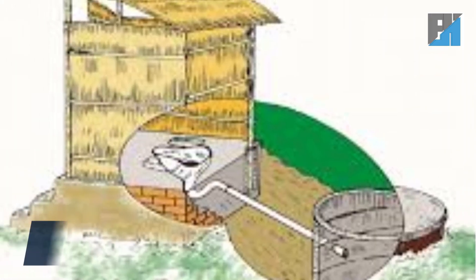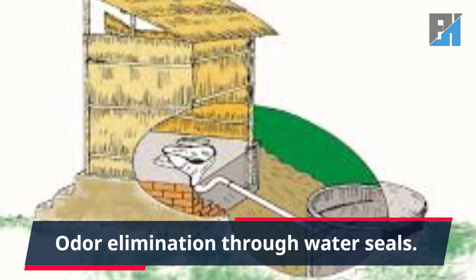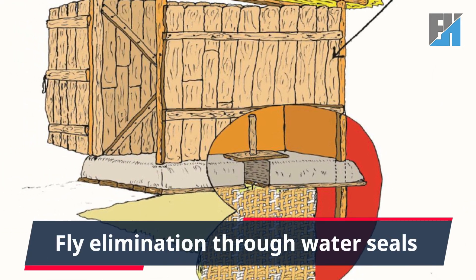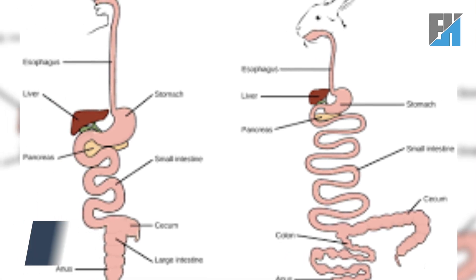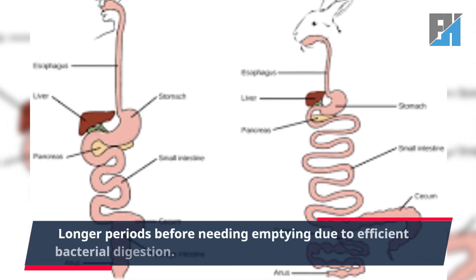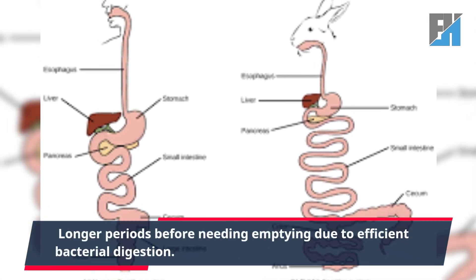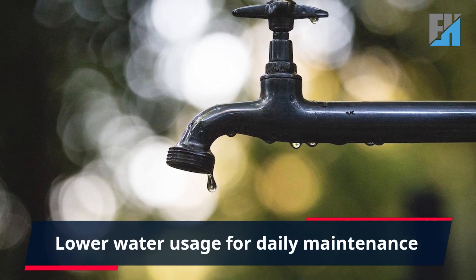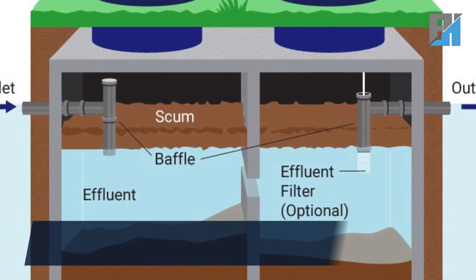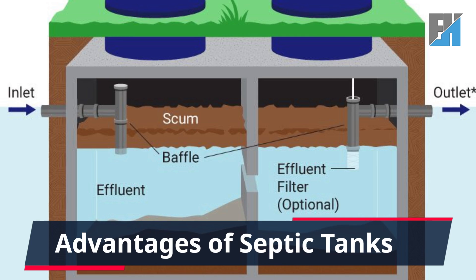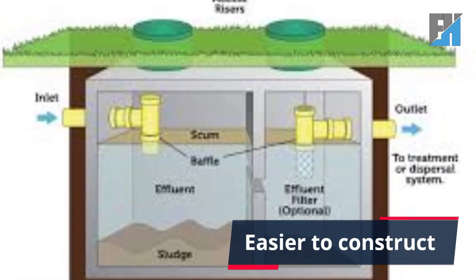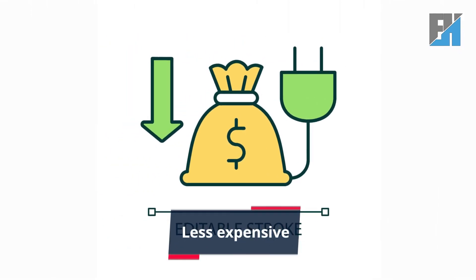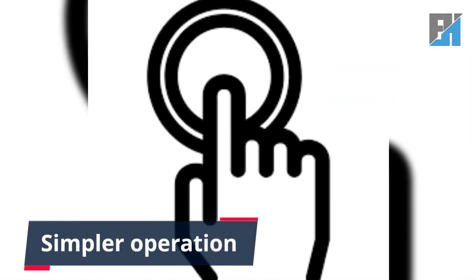Advantages of pit latrines: one, odor elimination through water seals; two, fly elimination through water seals; three, longer periods before needing emptying due to efficient bacterial digestion; four, lower water usage for daily maintenance.